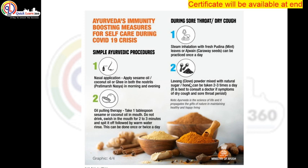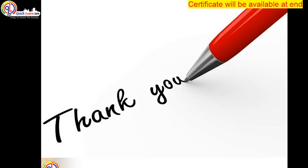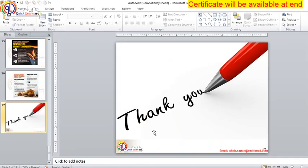Lavang powder, which is readily available in our house, mixed with natural sugar or honey, can be taken 2-3 times a day. For nasal application, use sesame oil, coconut oil, or ghee in your nostrils in the morning as well as evening — this will prevent the virus from entering. Oil pulling therapy: take 1 tablespoon of sesame oil or coconut oil in mouth, do not drink it, swish in mouth for 2-3 minutes and spit it out, followed by warm water rinse. This can be done once or twice a day. In this way, it will be helpful to prevent you from Corona. Stay home, stay safe.